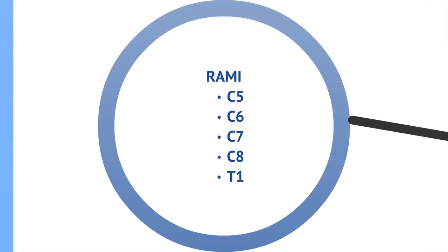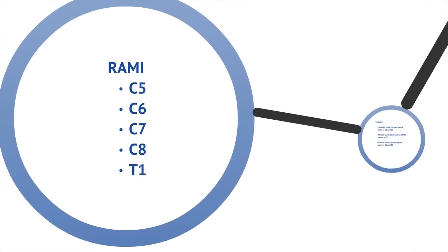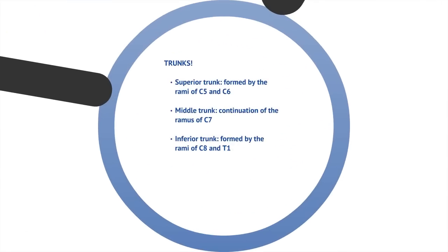The rami are C5, C6, C7, C8, and T1. They give off what we call the trunks. There's the superior trunk, which is formed by C5 and C6. The middle trunk, which is a continuation of C7. And then the inferior trunk, which is formed by C8 and T1.